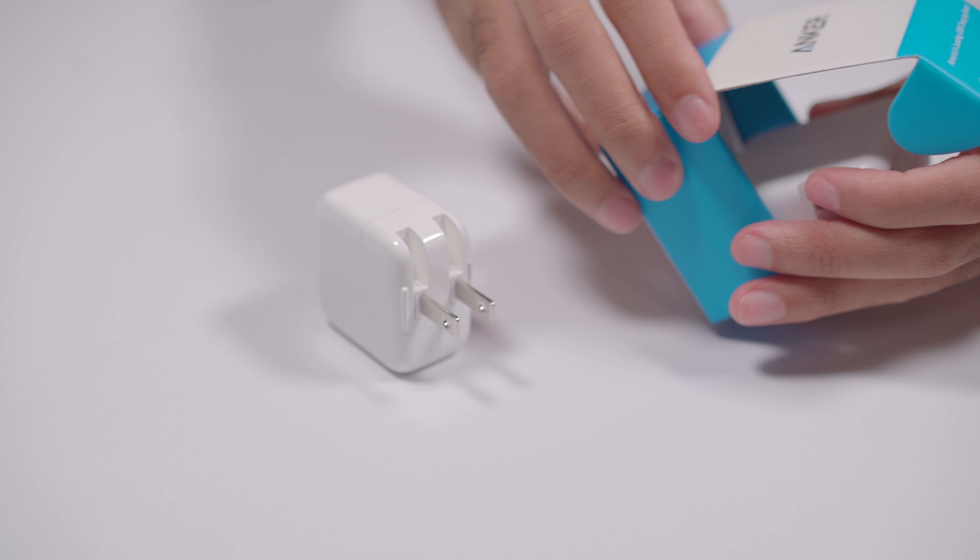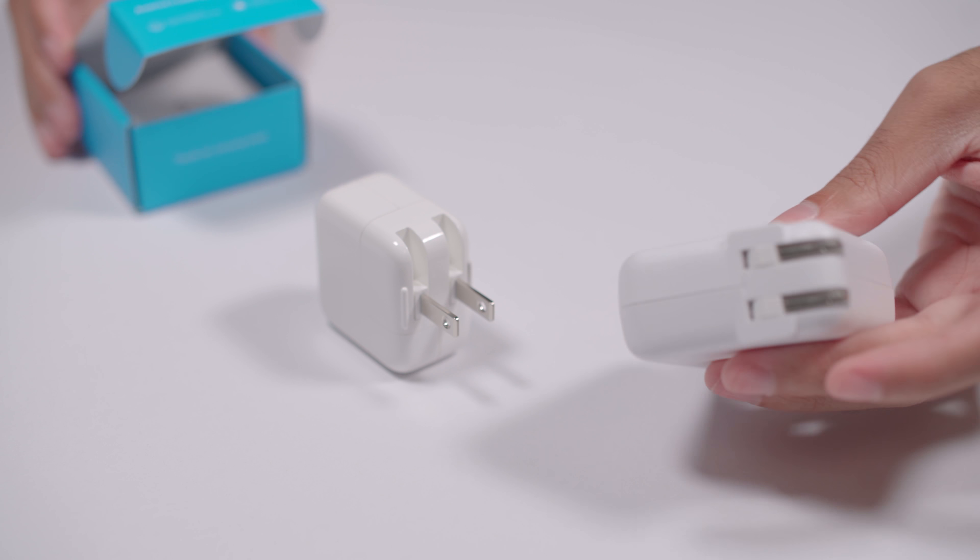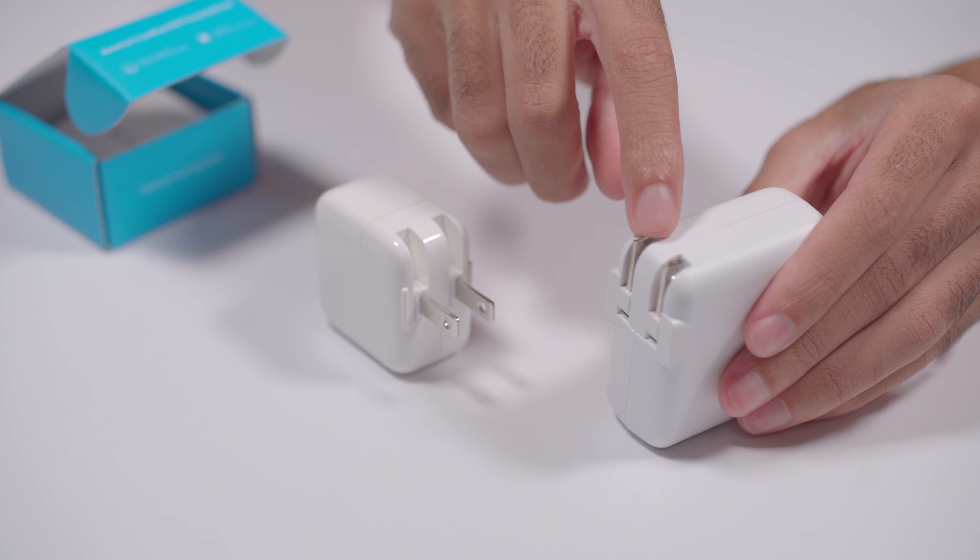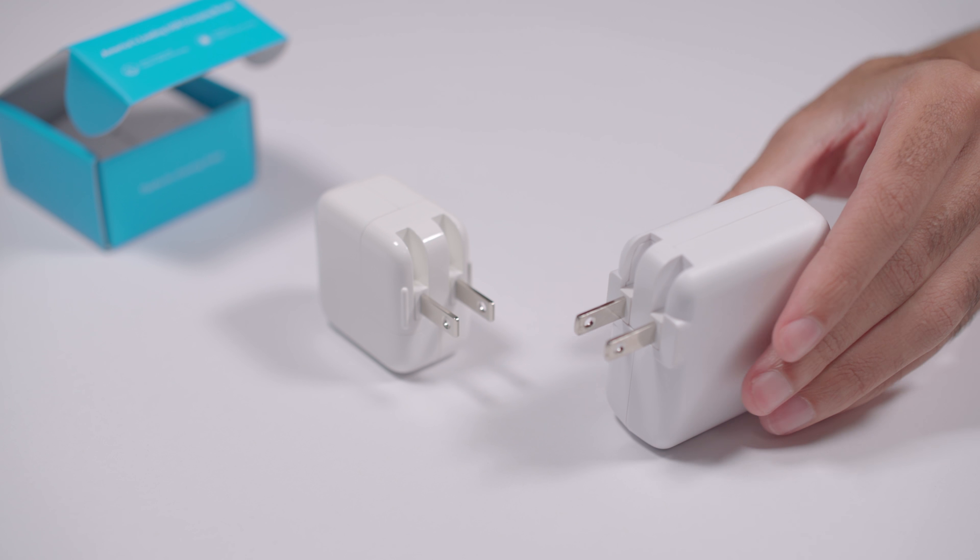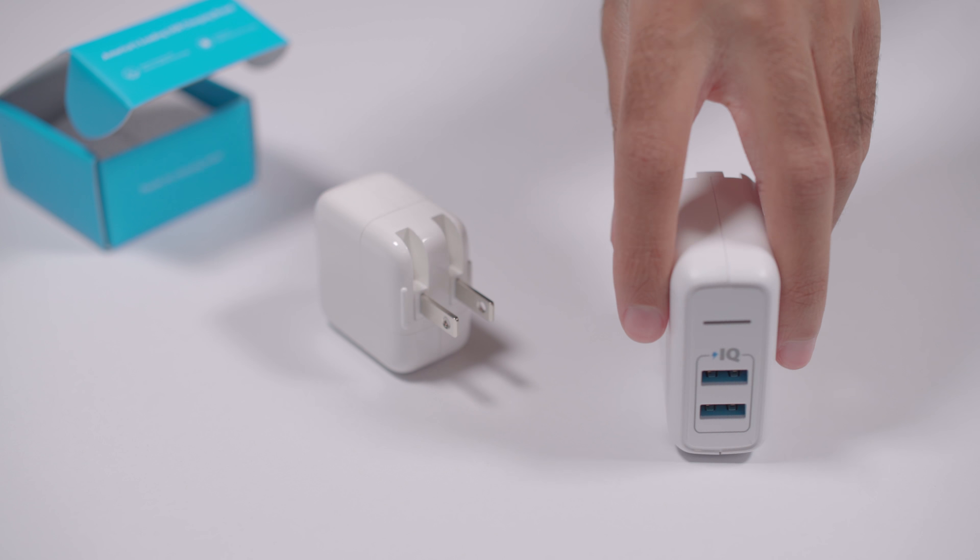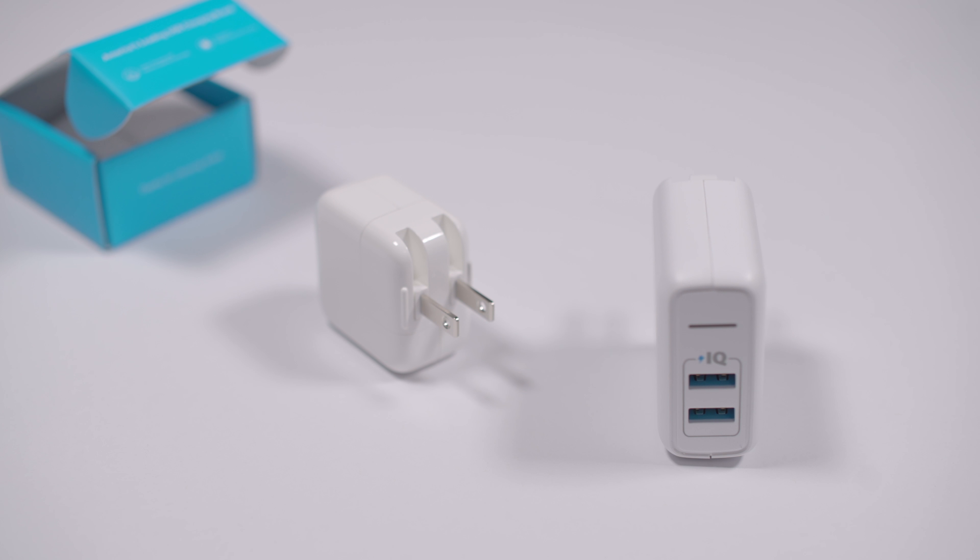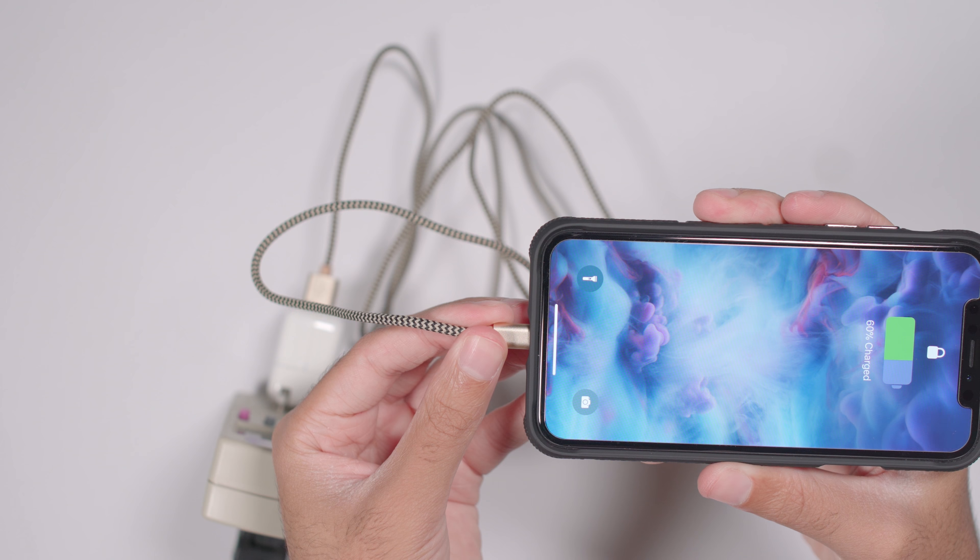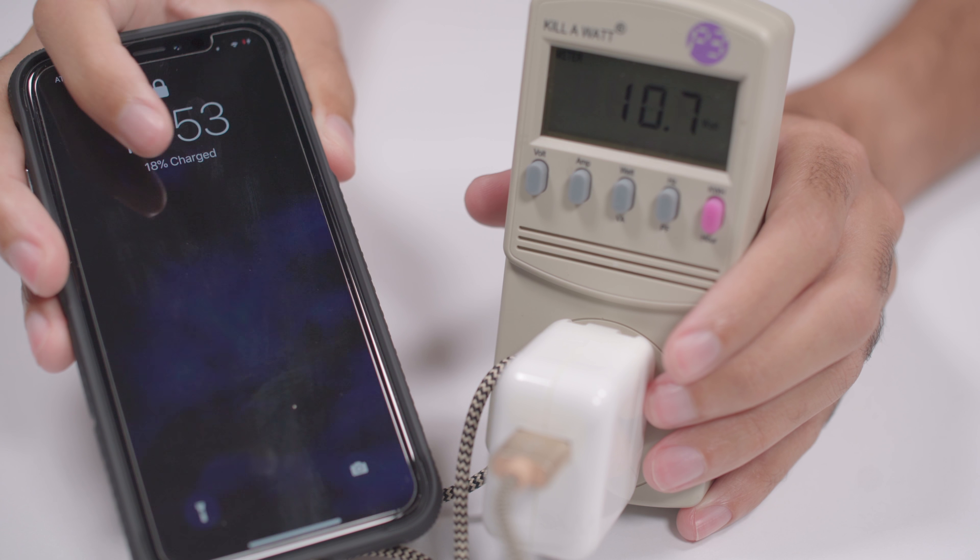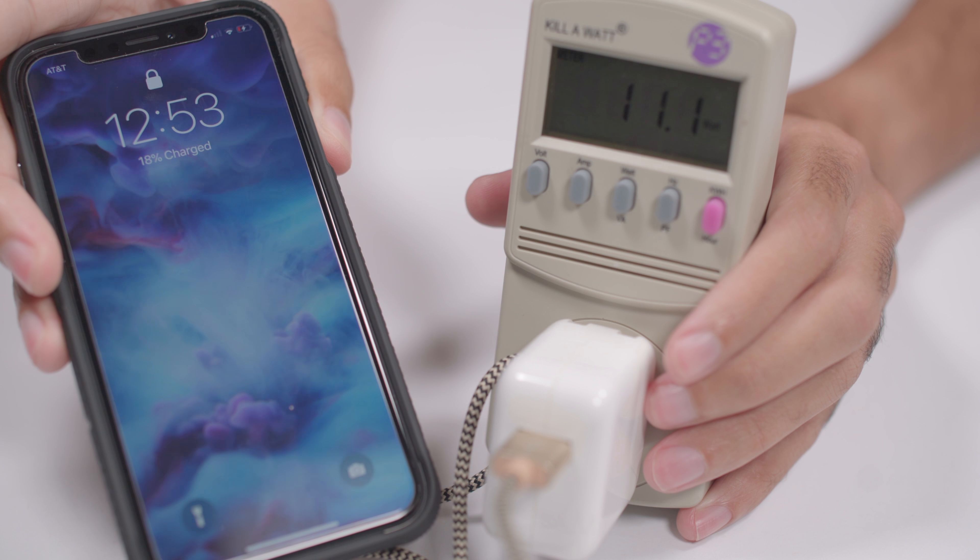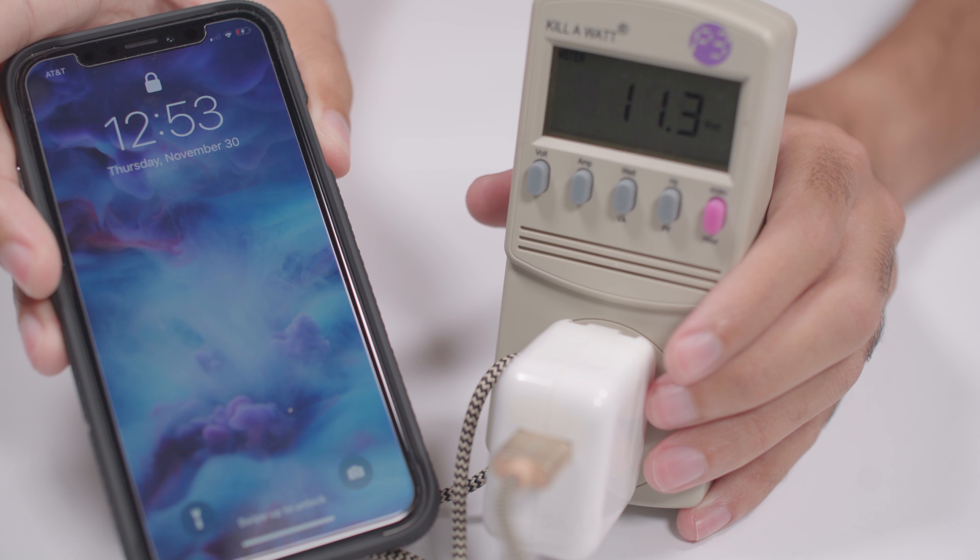This Anker AC adapter should match Apple's, and it provides dual USB ports, each delivering 12 watts. So Apple's up first. A wired connection is obviously going to be faster than wireless. Immediately the iPhone is pulling 11 watts from Apple's 12-watt USB adapter.